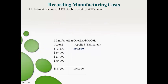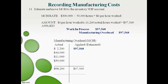The next step is to move manufacturing overhead costs from the temporary account to work in process — this is called applying manufacturing overhead. A manufacturing overhead rate is used to estimate the amount of cost incurred to make products. Total cost divided by total estimated direct labor hours gives the estimated cost per direct labor hour. The company estimate is $6 for every direct labor hour worked. Given 16,260 actual direct labor hours, the estimated overhead cost is $97,560. This amount is moved out of the temporary manufacturing overhead account and into work in process.